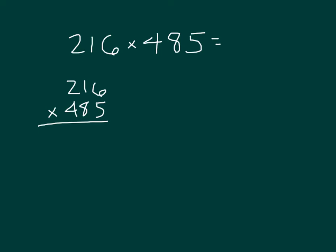We'll start with those 5 ones times 6 is 30, zero, regroup a 3. Then 5 times 1 is 5 plus 3 is 8. 5 times 2 is 10. So that 216 times 5 is 1,080.